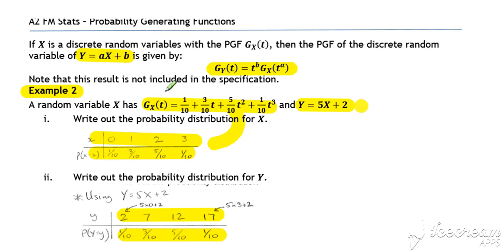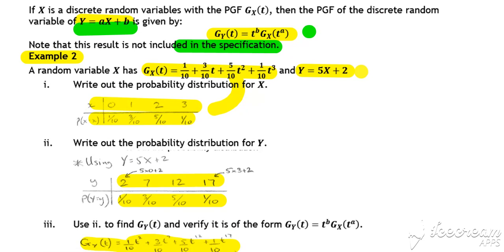So here where we've noted it's not included in the specification, what we mean is that formula is not provided in the formula booklet. That little special case result for a linear transformation of a discrete random variable is one that you need to remember. You can always do it the long way around, but it's useful to know that to speed up the process for that kind of question.